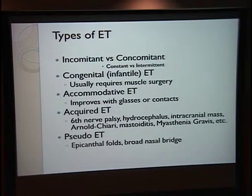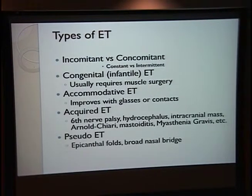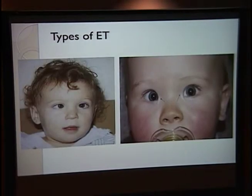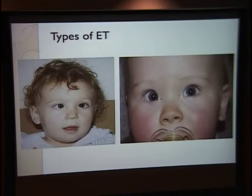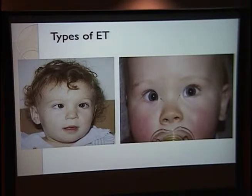Pseudoesotropia is a very common finding. We've seen several cases of this so far over at Primary Children's, and it's the appearance of esotropia where there is none. You can determine this using the corneal light reflexes to figure out if the patient's eyes are actually straight or deviated. It's caused by epicanthal folds and broad nasal bridges. On the left you can see a true esotropia, and on the right you can see epicanthal folds that make it appear as though there's less sclera on the patient's right eye, where there is actually an equal amount of sclera just covered by the skin. A lot of people will refer these patients in for evaluation when, in fact, their vision is normal.